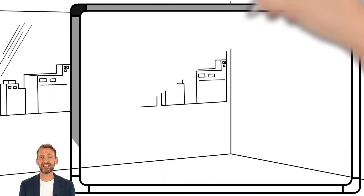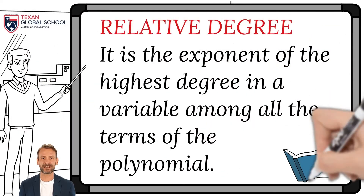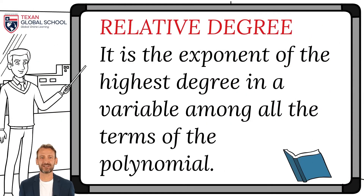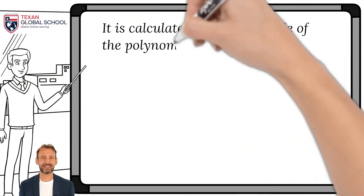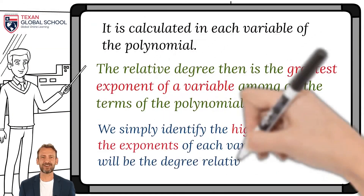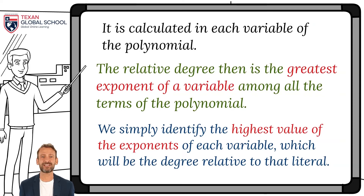On the other hand, the relative degree is the exponent of the highest value or degree in a variable among all the polynomial terms. It is calculated in each variable of the polynomial. We identify the highest value of the exponents of each variable, which will be the degree relative to that literal. Again, neither the numerical coefficients of each term nor the independent term affect the relative degree.